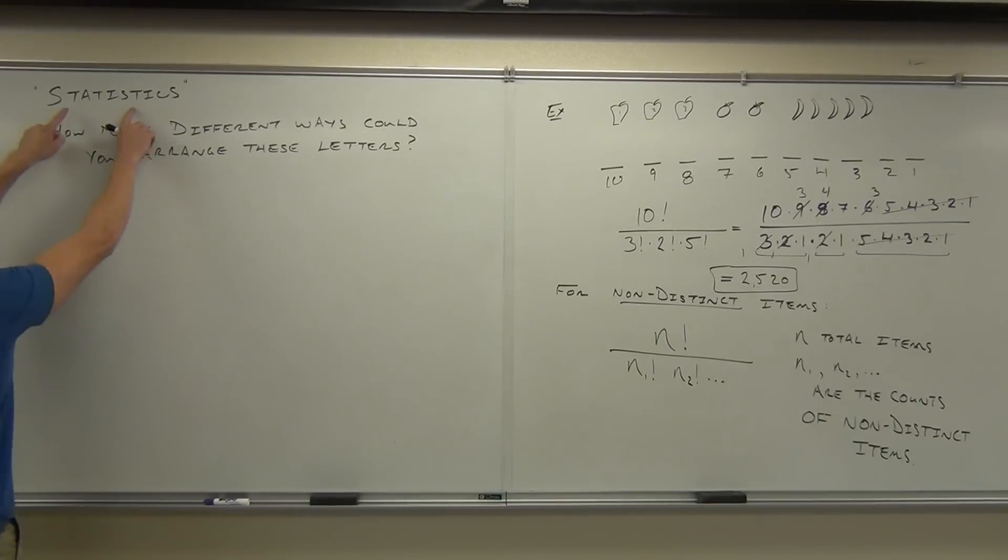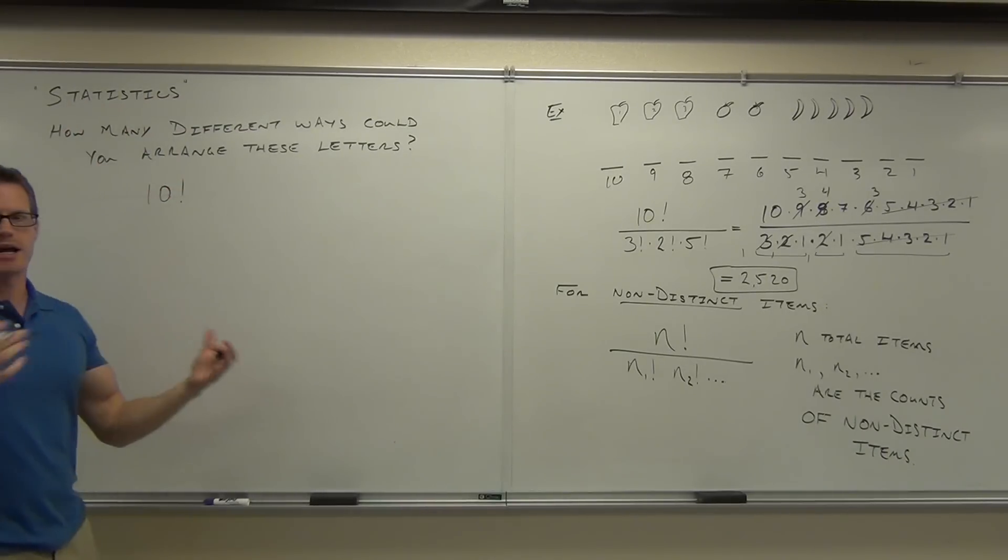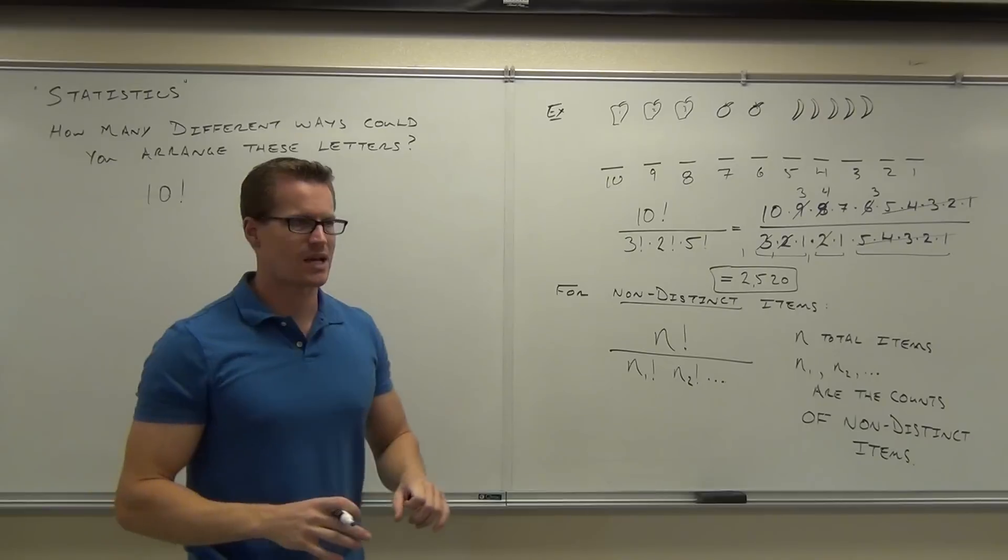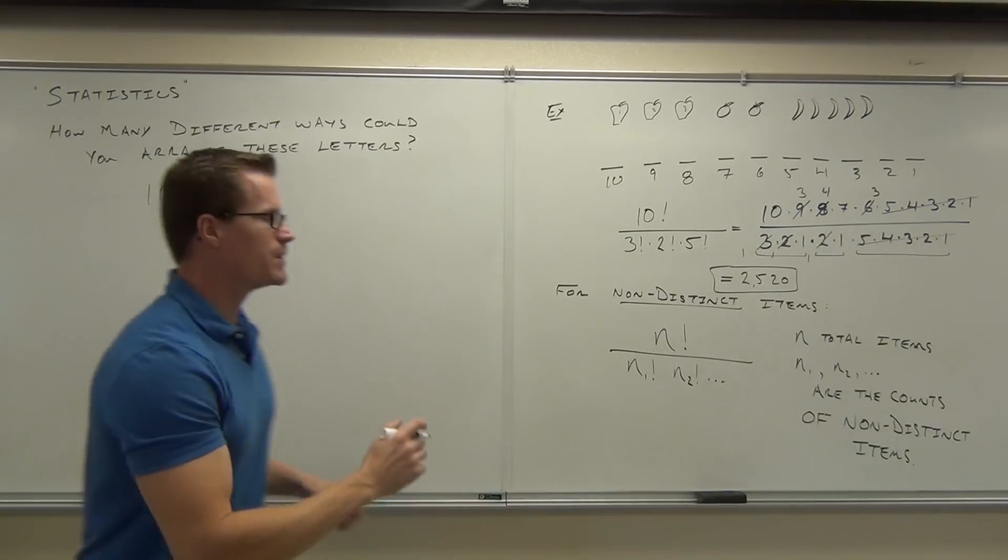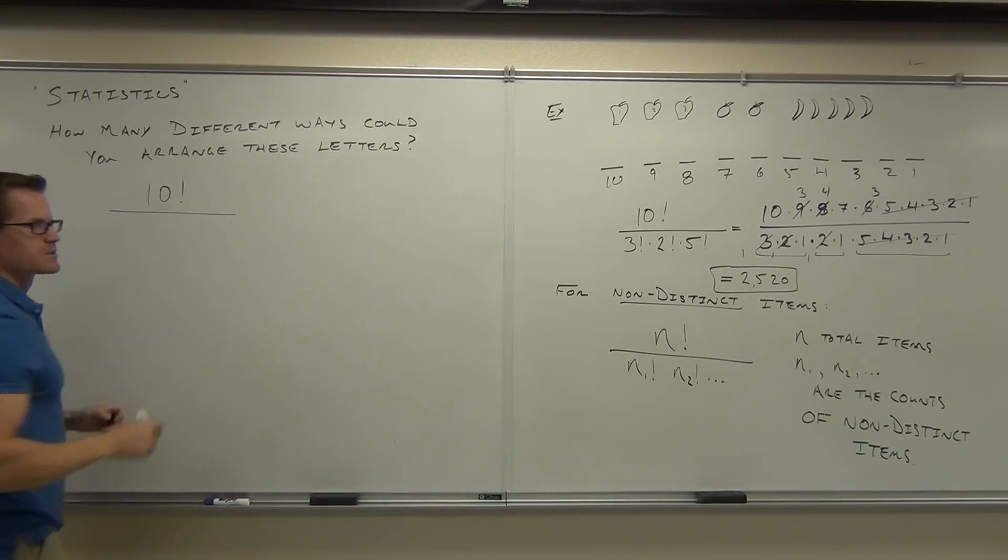So, for instance, if I switch this T and this T, if I just went like this, would you be able to tell the difference in this word? Those T's are the same. Same thing like our apples and our oranges. So, we would initially have 10 factorial different items to arrange. If these were different items, that's how many arrangements we would get out of it. But now we've got to divide by all the items that are the same.